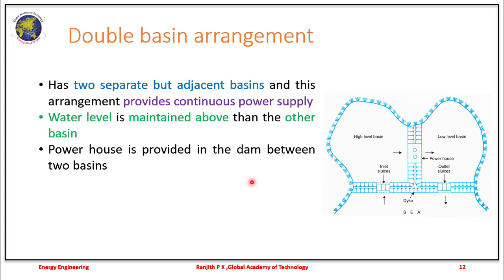In a double basin arrangement, there are two basins placed adjacent to each other. This arrangement ensures continuous power supply. The water level in one basin is maintained higher than the other, and the power house is located between these two basins.